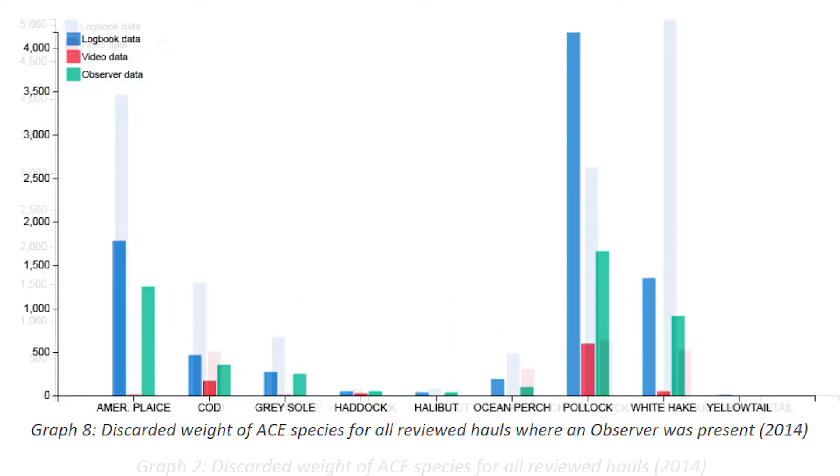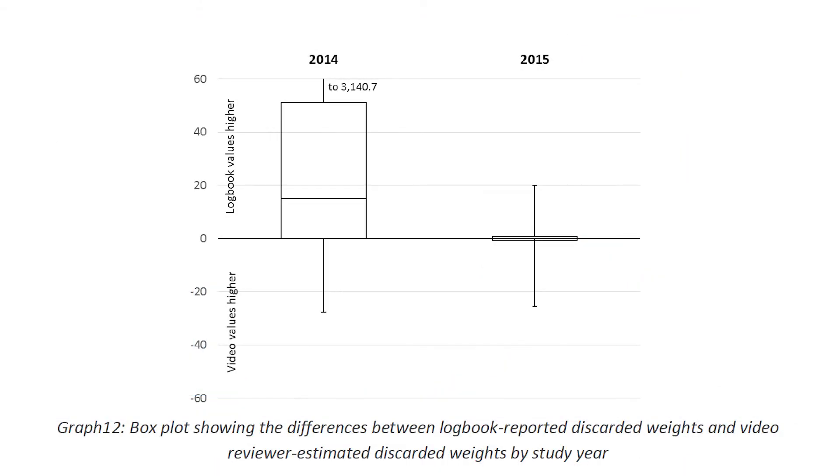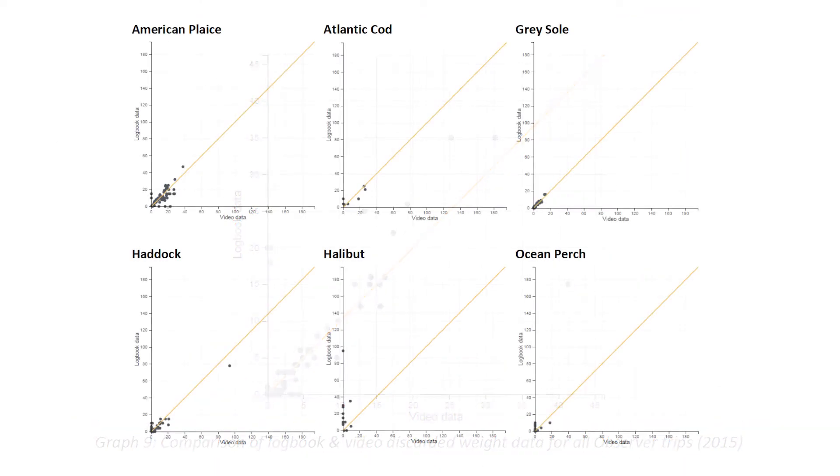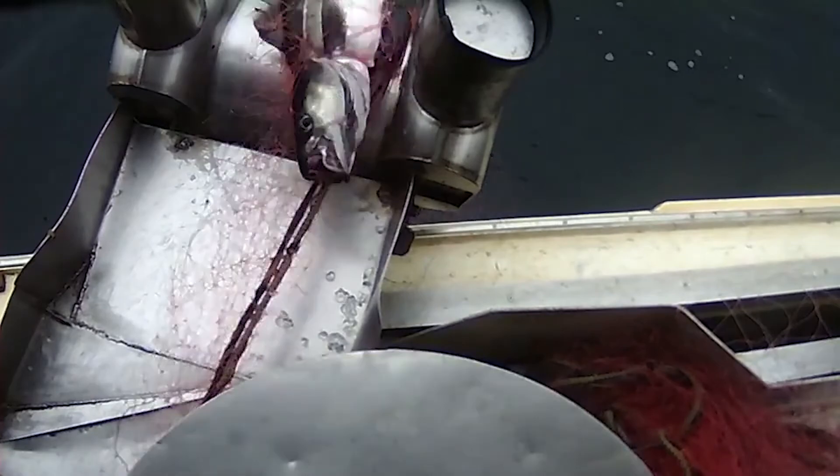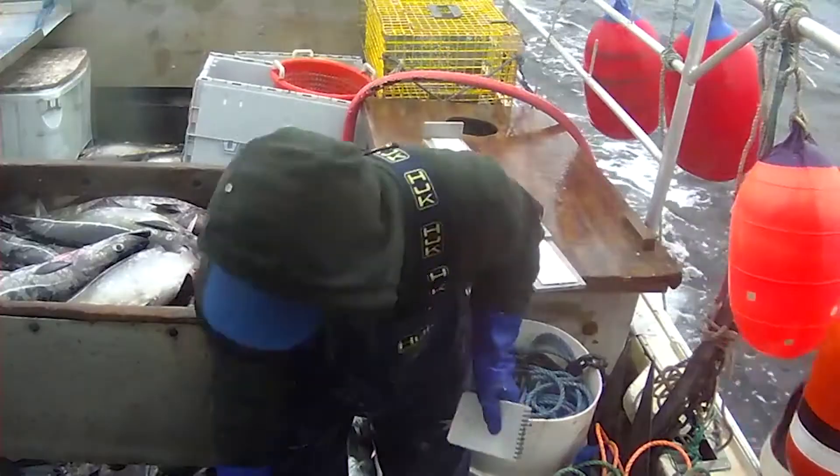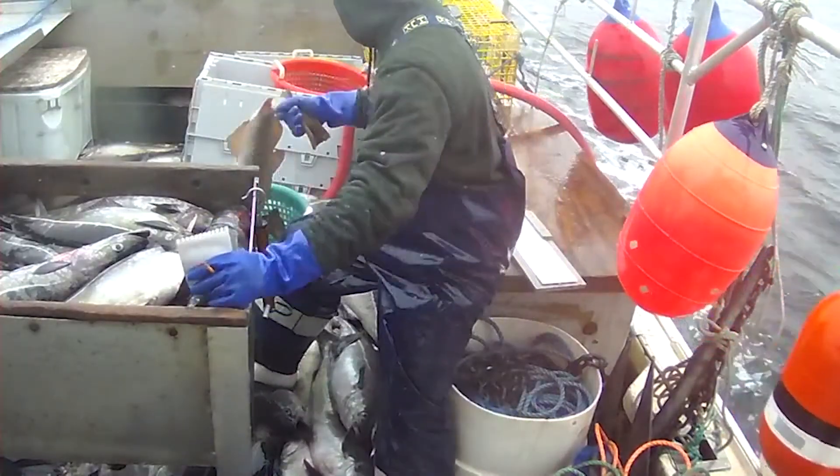One of the most exciting parts about electronic monitoring is the ability to collect more data. We can collect more data with electronic monitoring because it's really easy to program cameras to run 100% of the time, opposed to a human monitor who is only deployed on a portion of the trips. That results in more data that the fishermen trust that they helped collect, and that data is used to manage the fishery.